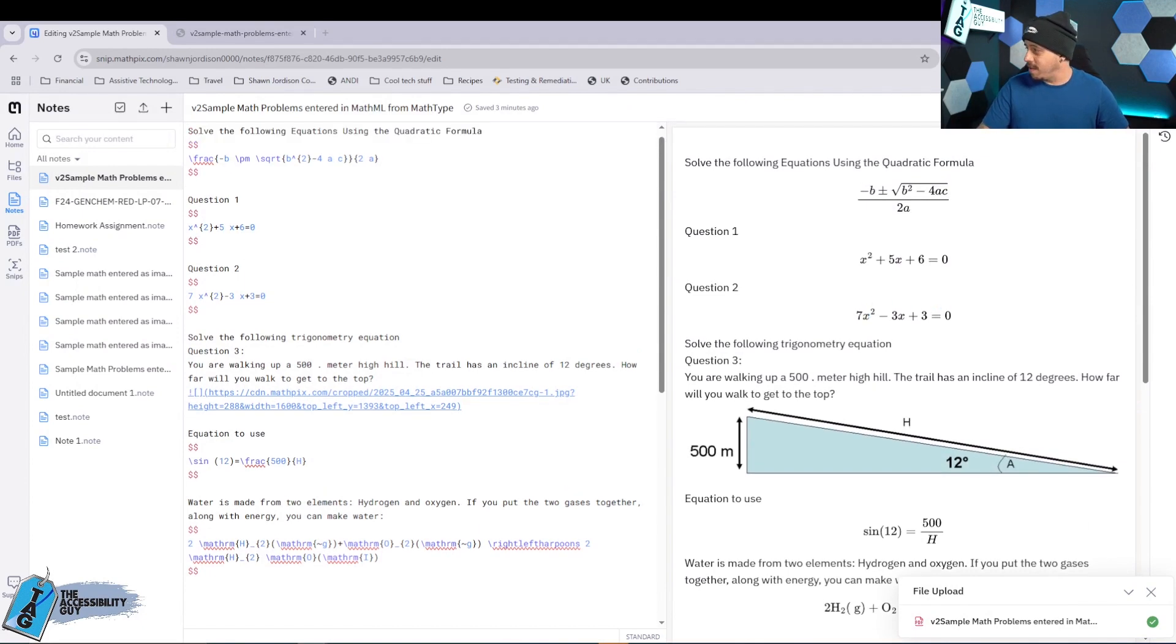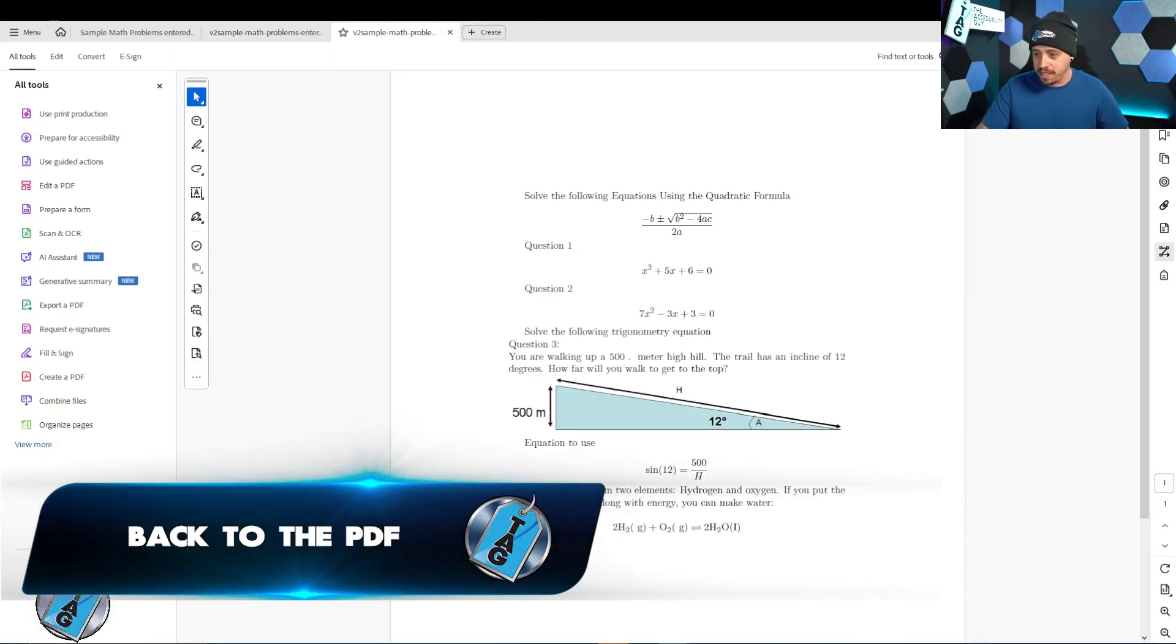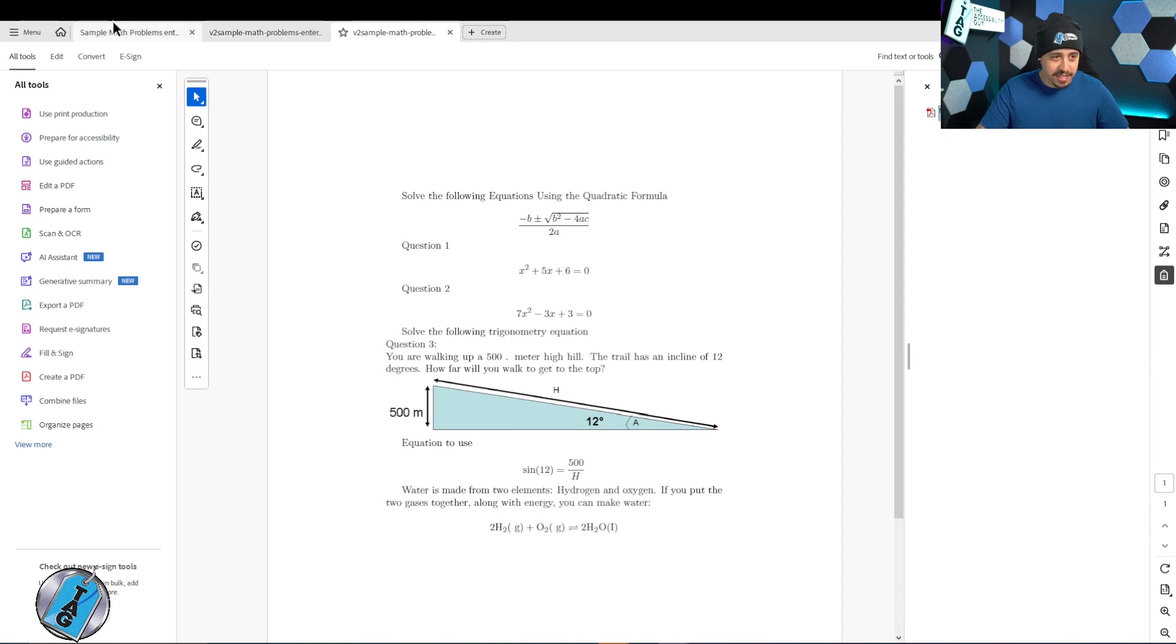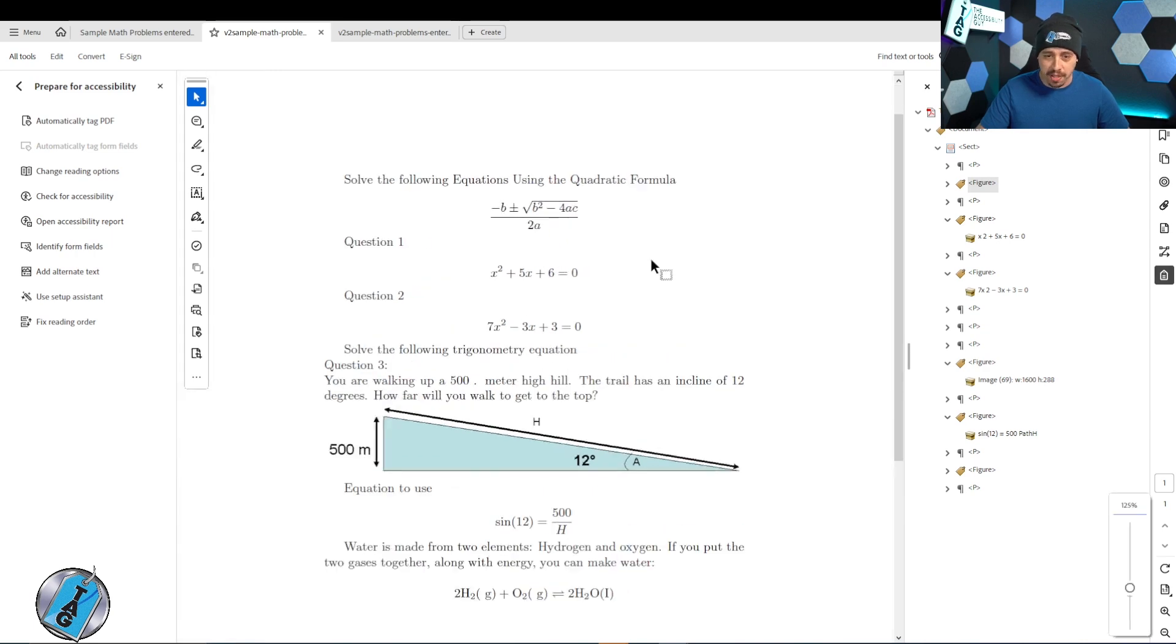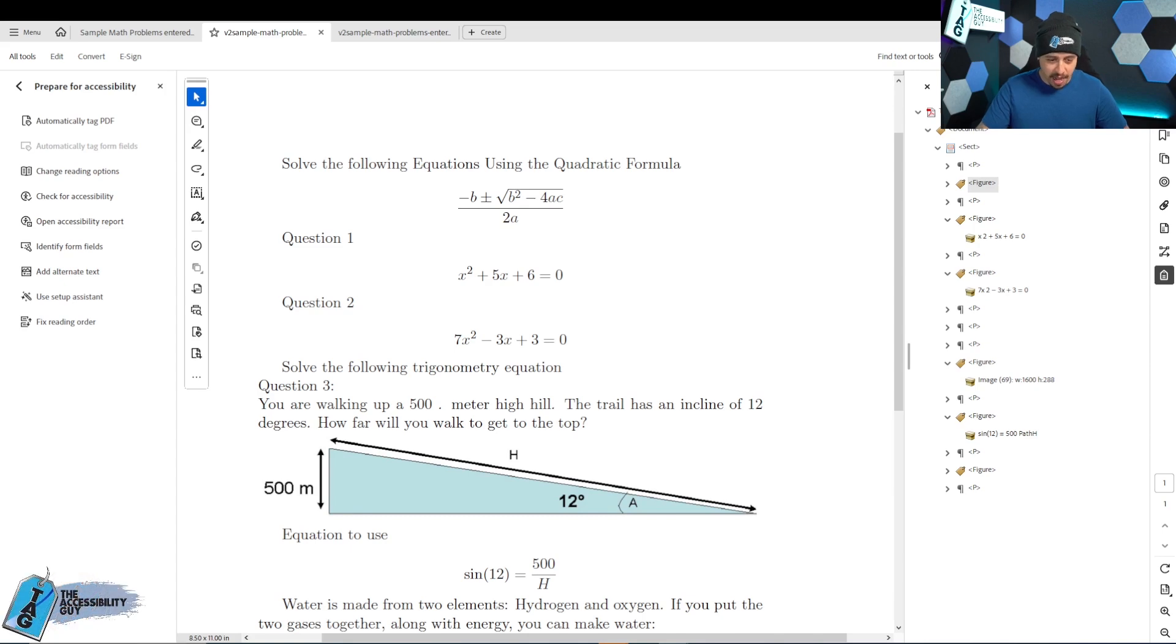All right. But we still don't have the problem solved of what we're going to do with these tags in here that are not tagged. So my thought is we're going to want to do the LaTeX description as the alt text for the figure tag. So I'm going to pull up another tool.